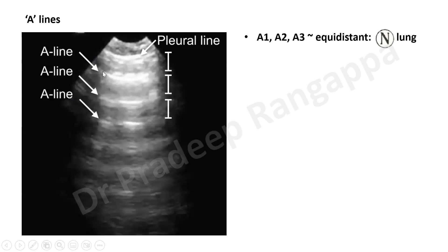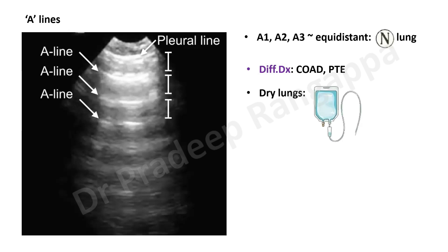At the second point, you look at A-lines. A-lines are horizontal lines that run parallel to the pleural line, equidistant to each other — A1, A2, A3, and so on. Presence of A-lines is called an A-profile, which indicates a normal lung. The differential diagnosis is COPD or pulmonary thromboembolism, where lungs appear normal — no parenchymal pathology. For intensivists, seeing an A-profile means the lungs are dry and you can proceed with fluid resuscitation without limitation.